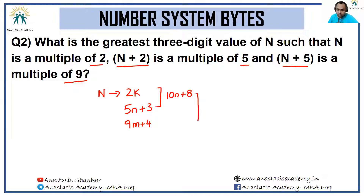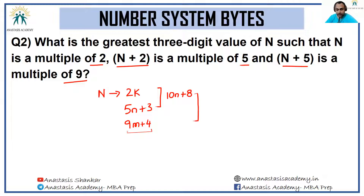Now I combine 10n + 8 and 9p + 4. In 10n + 8, the units digit is 8. So I'm looking for a multiple of 9 that leaves a units digit of 4 — and that is 54. When I combine these two I get 90n + 58, since LCM of 10 and 9 is 90, and 9×6 = 54, so 54 + 4 = 58, and also 10×5 + 8 = 58.